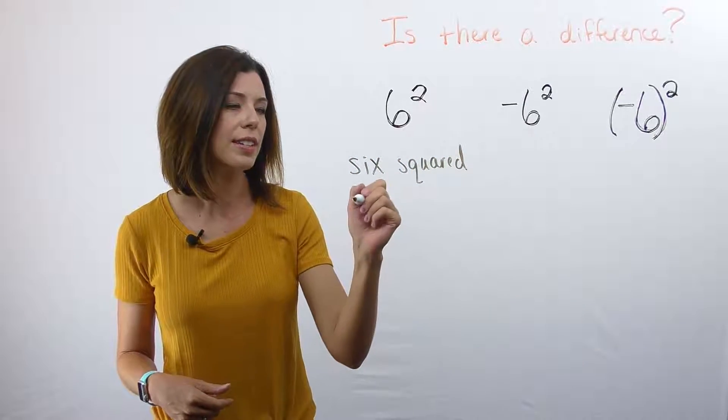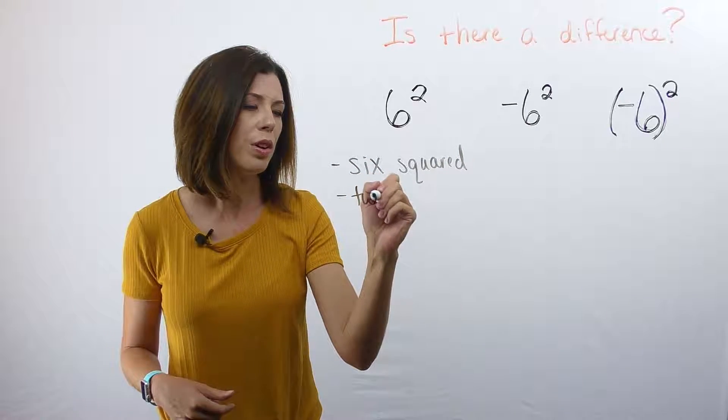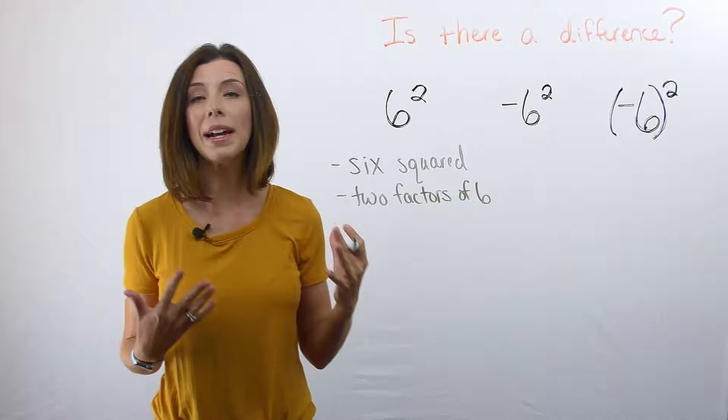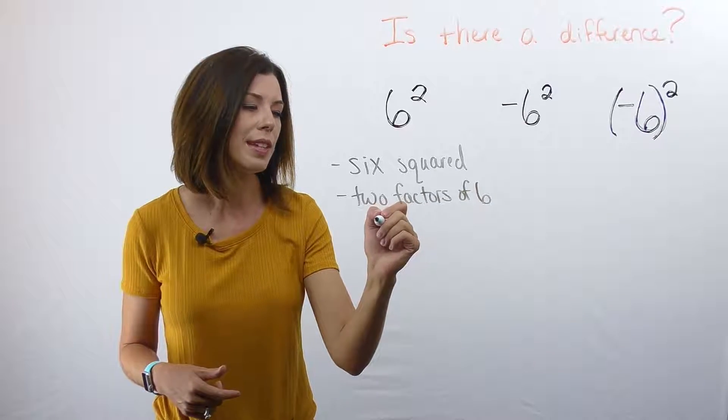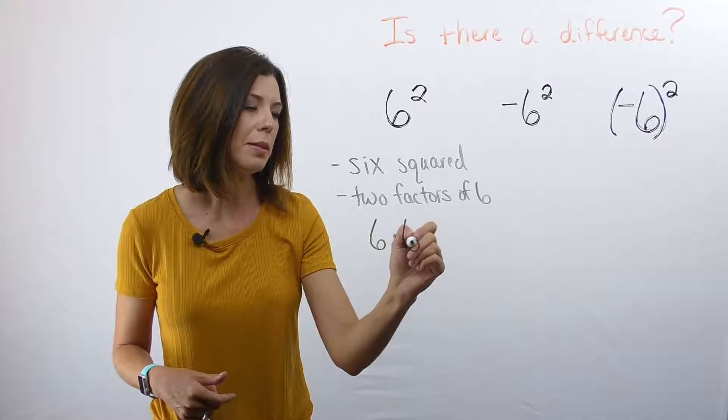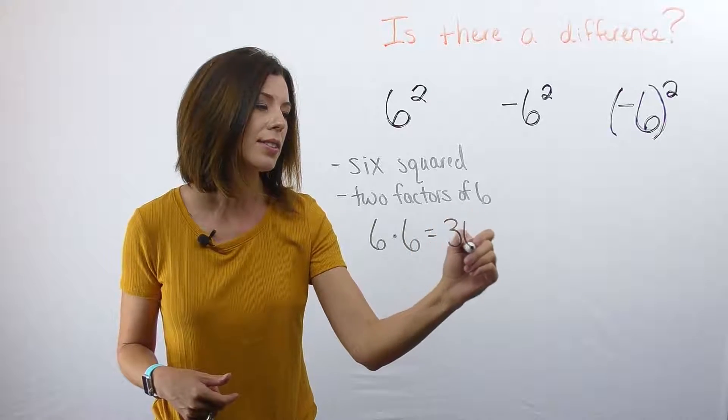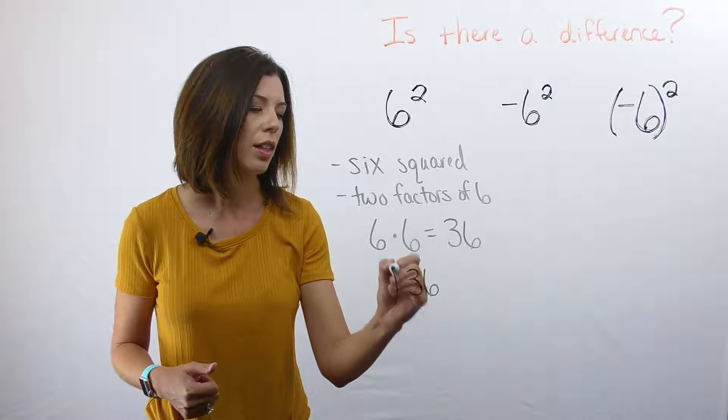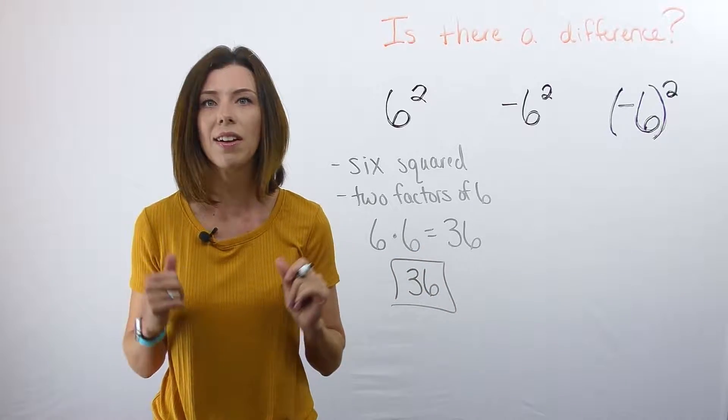We could also think of this as saying two factors of six. Now if we're going to write this out as an equation, we would say 6 × 6 is the same as 36. So we know that 6² is 36. Okay, awesome.